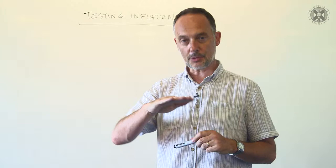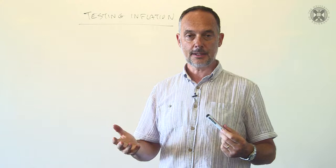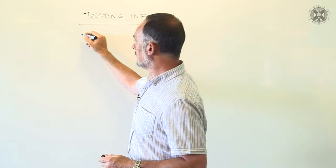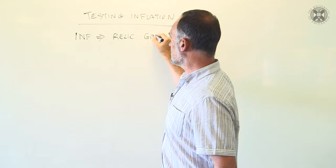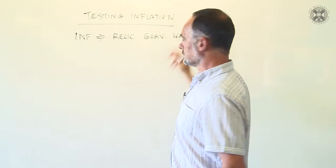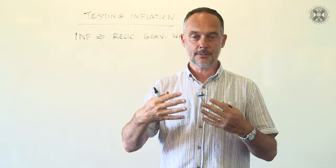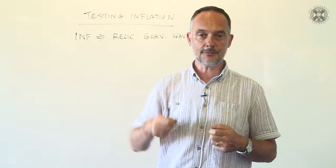Because if that mechanism operates, it shouldn't just modulate the density of matter in the universe. It should affect any field. In particular, it should affect the gravitational field itself. So, the inflationary theory predicts that it should be relic gravitational waves. By which I mean waves that are the analogue to gravity as light is to electricity and magnetism, fluctuating lines of force in the gravitational field, time-dependent gravitational forces.